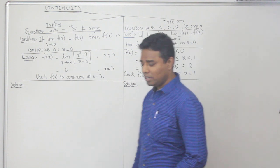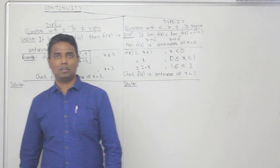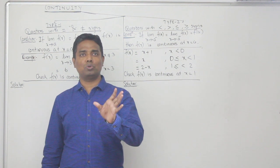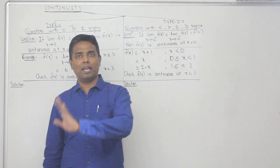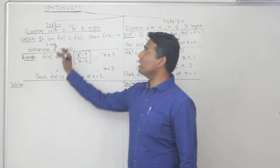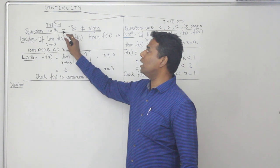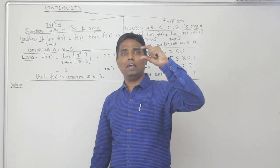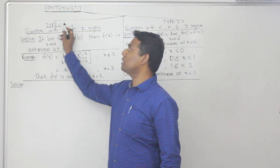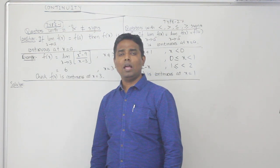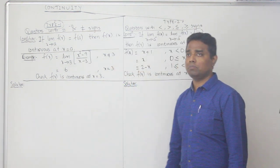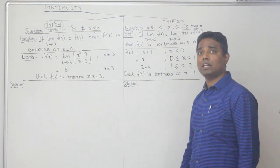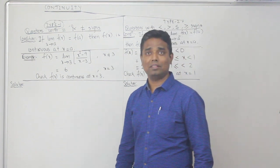In the examination, continuity questions can be classified into two categories — Type 1 and Type 2. You will identify whether a question is Type 1 or Type 2. Type 1 questions have equal to sign and not equal to sign. Type 2 questions may have less than, greater than, or equal to signs — that is, inequality signs. That is Type 2.